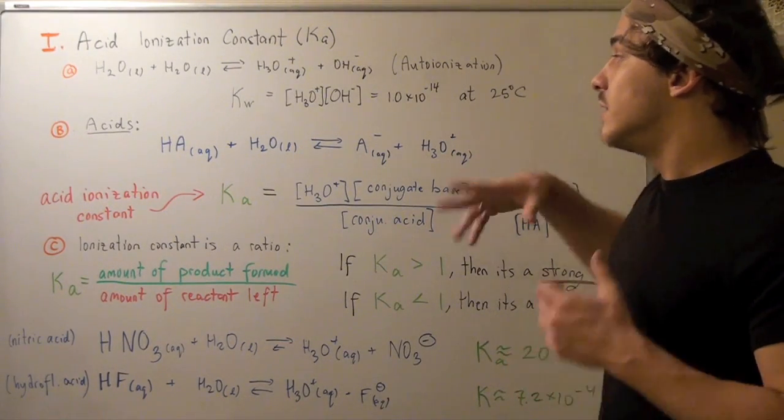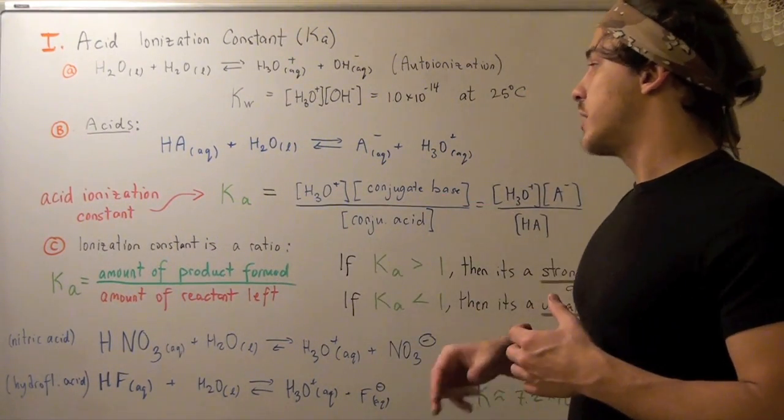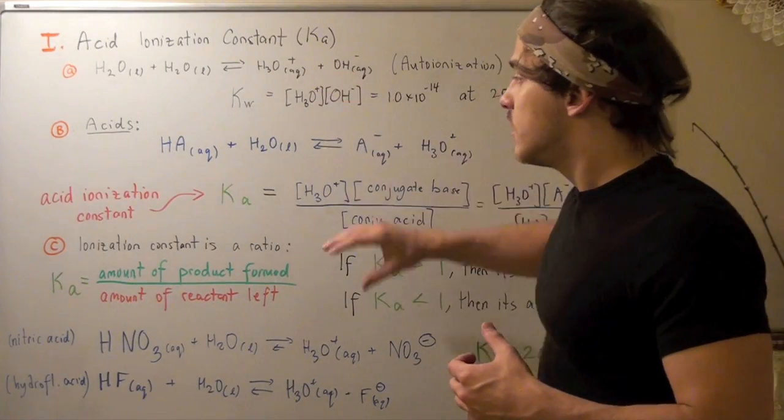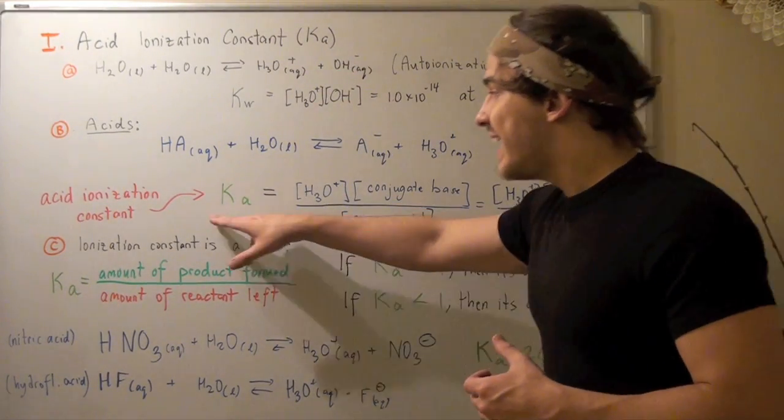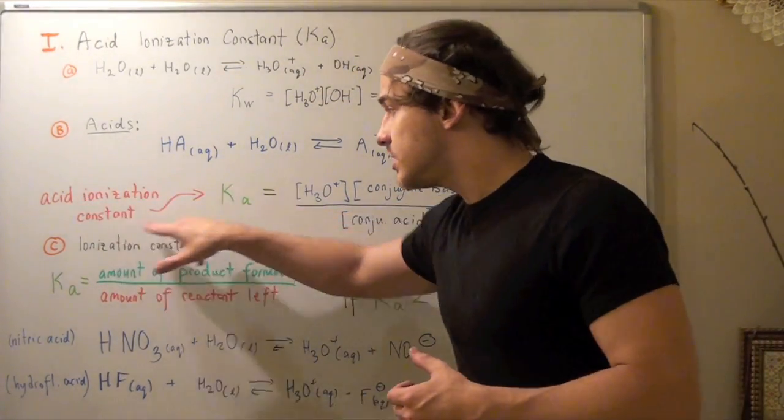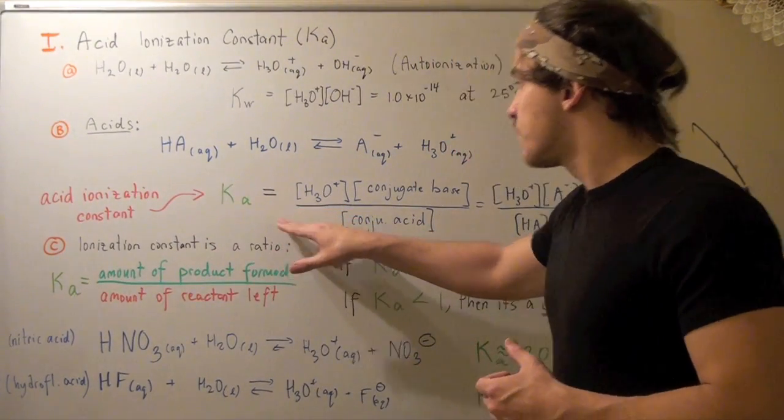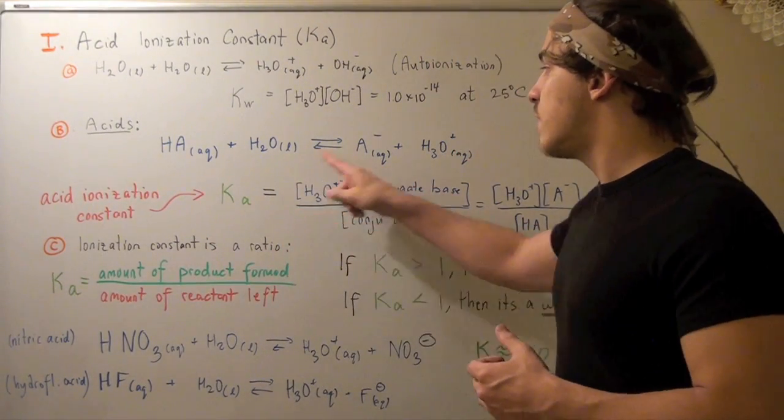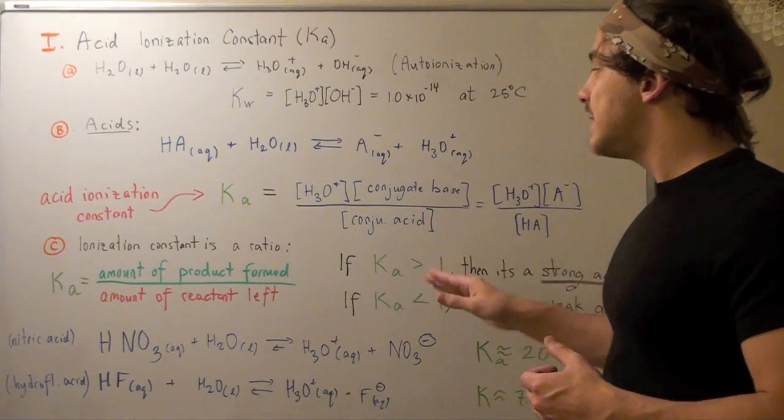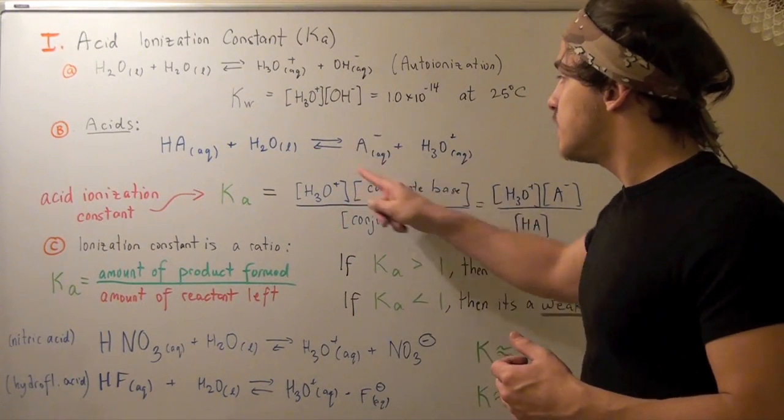Let's write the equilibrium constant expression the same way we did for water. So Ka, our acid ionization constant, is equal to the concentration of hydronium times the concentration of the conjugate base.